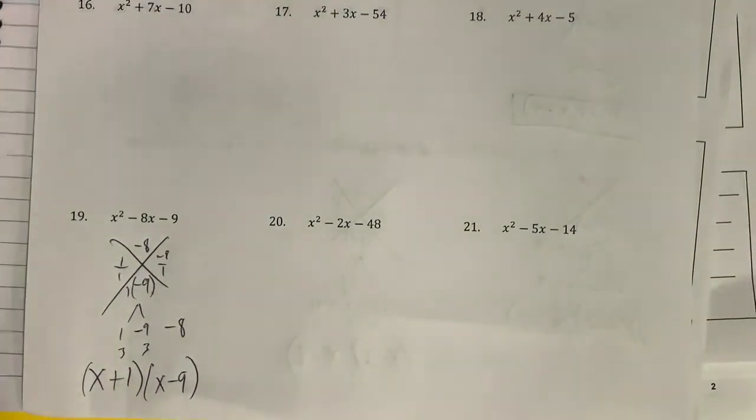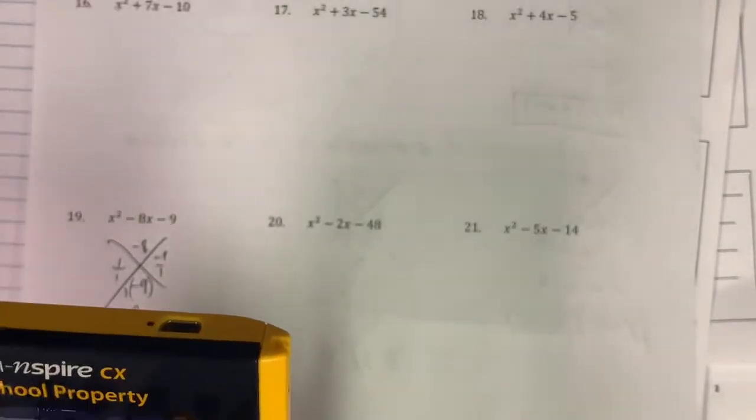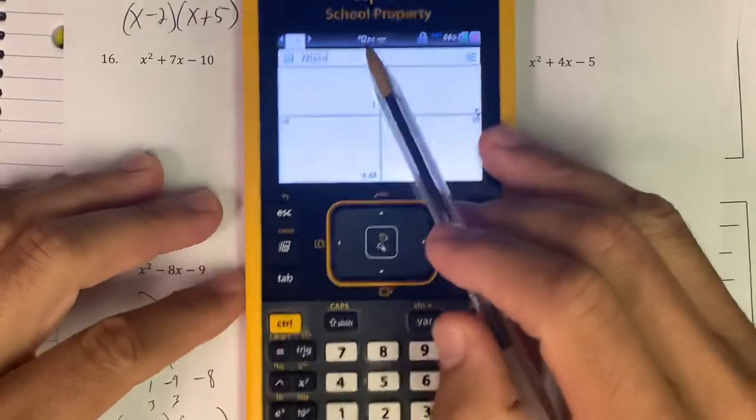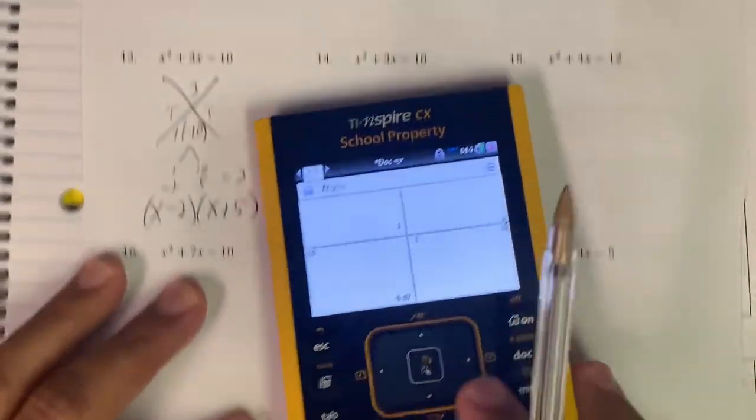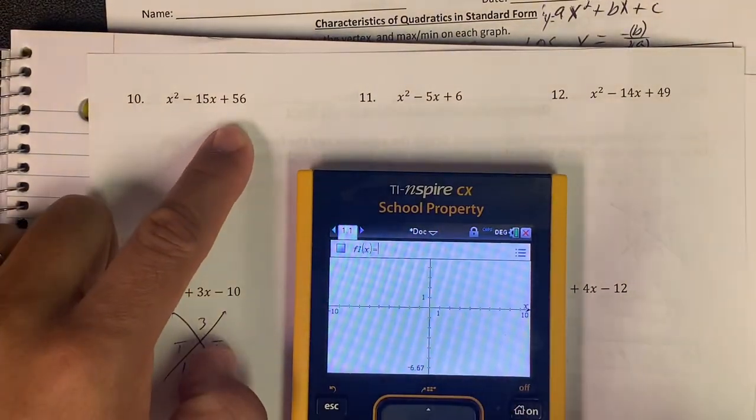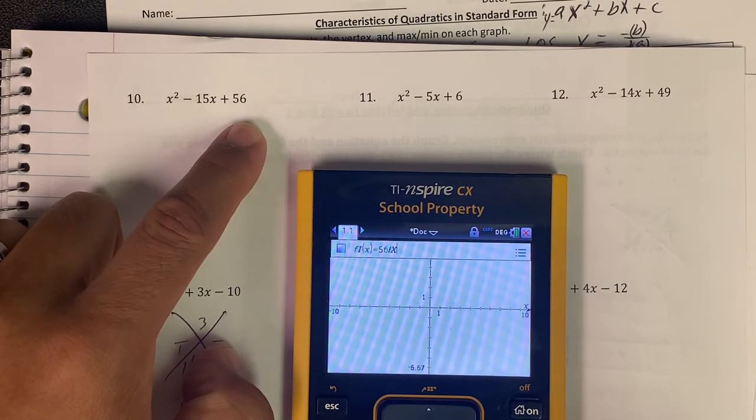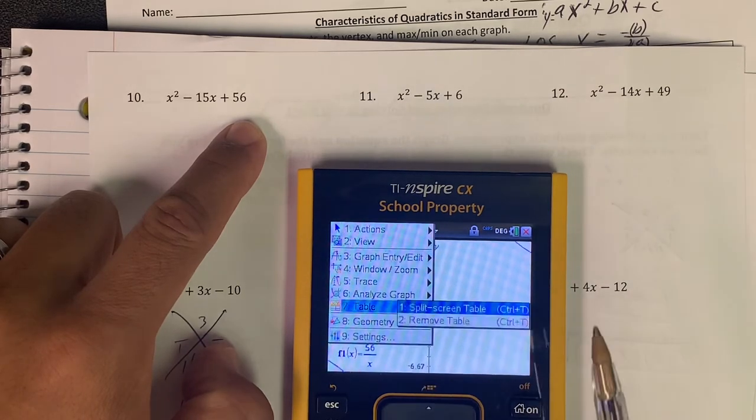When you need to factor though, that's when you can use the calculator. If you do a graph, like I saw a number up there that was 60 or 56. What are the factors of 56? I don't really know, but if I do the number divided by x and I hit enter, I don't care about the graph, but when I go to the table...